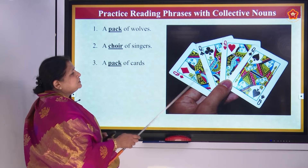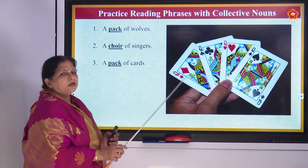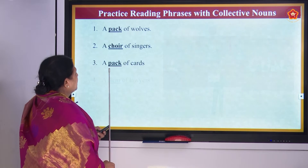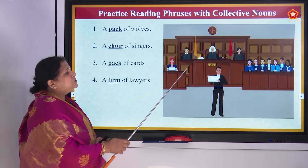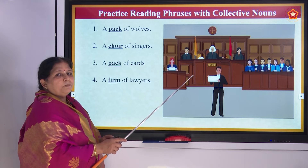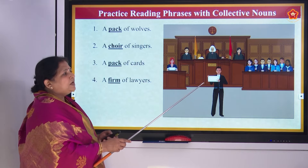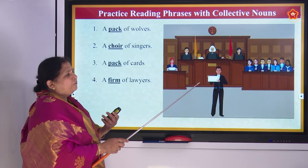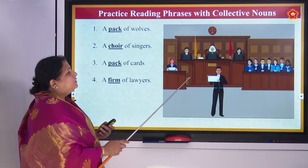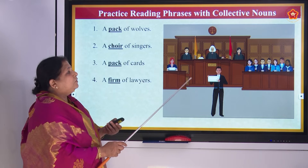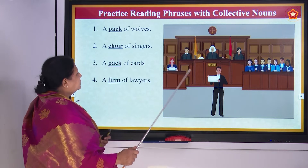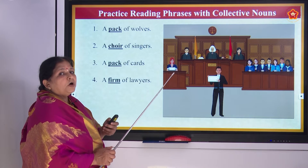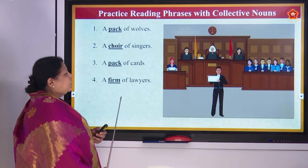Then pack of cards. Many cards together — one card is a card, but many cards together is pack of cards. Then firm of lawyers. Those who have passed a law degree are called lawyers, and when so many lawyers are together, they are called a firm — F-I-R-M — firm of lawyers. They fight for their clients and give their arguments in front of the judge.